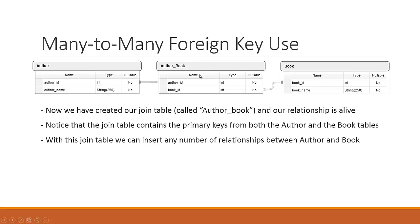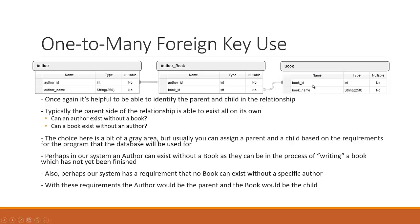It's not critical that you name the join table specifically according to this convention, but it is a convention, so it's a suggested approach when naming your join tables. The join table contains the primary keys from both table A and table B — which is author and book — and with this join table, we can insert any number of relationships between the author table and the book table.